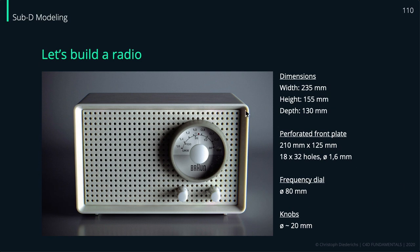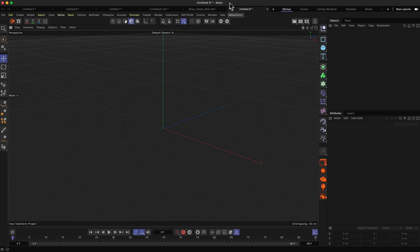To wrap things up on the modeling part of the series, I'd like to take you through modeling this radio. I picked this because it's actually quite simple to build and we can separate it into different parts. There's everything in it: polygon modeling, spline mask, and a little bit of subdivision surface modeling on the outer part. Let's go into Cinema 4D.